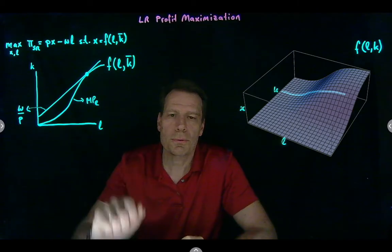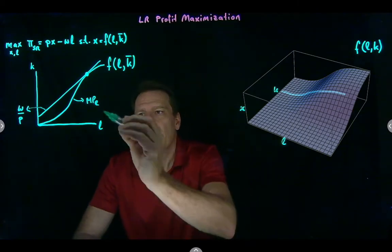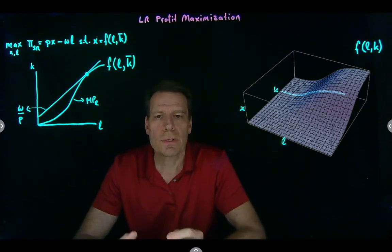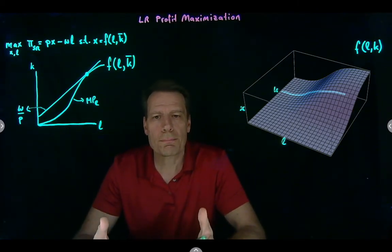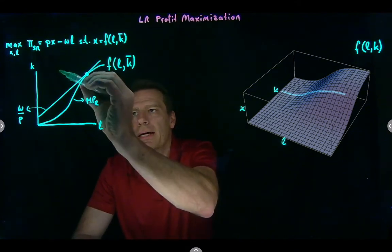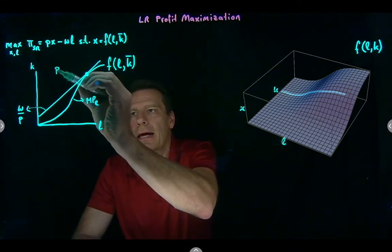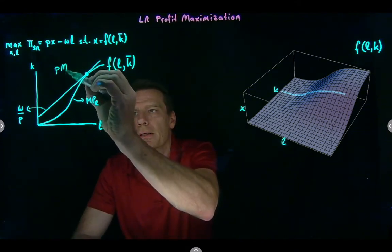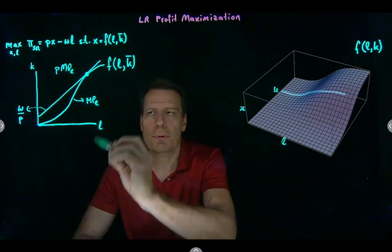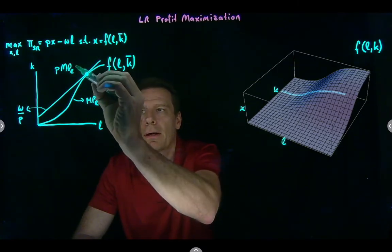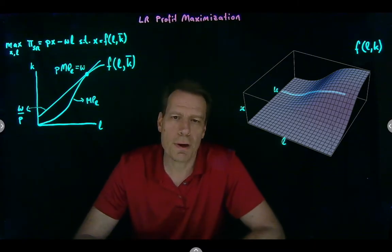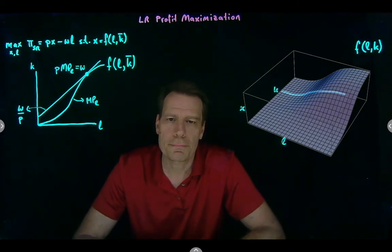By setting those equal to each other and then multiplying through by the price, we get the short run profit maximizing condition: price times marginal product of labor — what we've called the marginal revenue product of labor — must be equal to the wage when the firm profit maximizes in the short run.